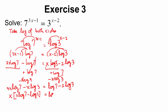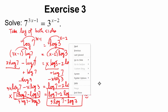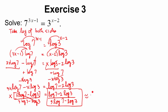We're almost done. Divide both sides by 3 log 7 minus log 3 to get the exact answer: x equals (log 7 minus 2 log 3) divided by (3 log 7 minus log 3). Entering this in the calculator gives approximately negative 0.53.